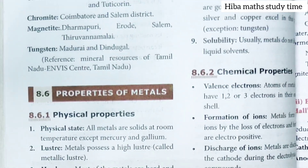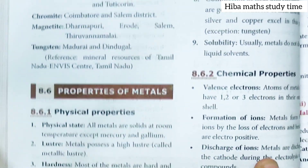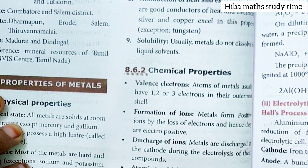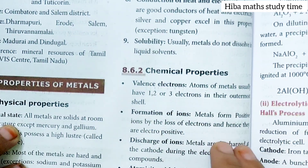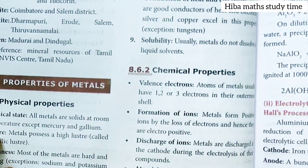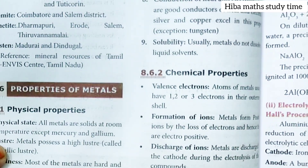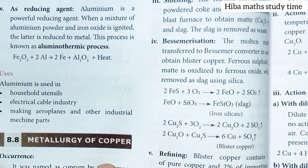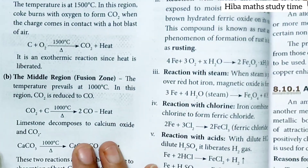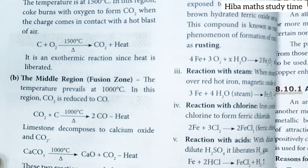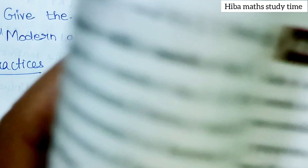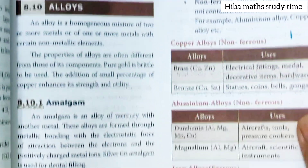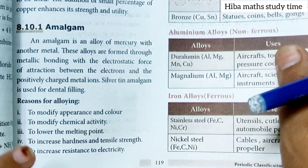In page 114: properties of metals and occurrence of force in Tamil Nadu — side-by-side mark. Chemical properties of metals: two marks, five marks. Metallurgy of aluminium, metallurgy of copper, metallurgy of iron. Alloys — very important in the book. Define alloys, amalgam, reason for alloying.